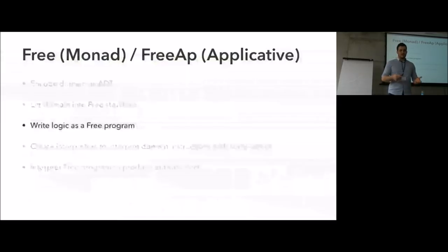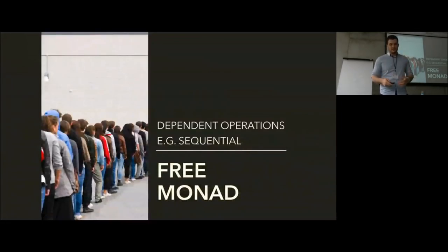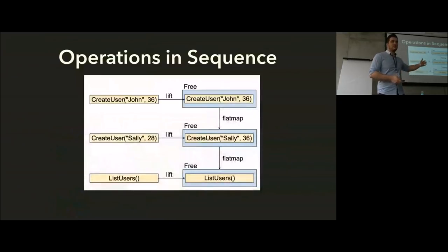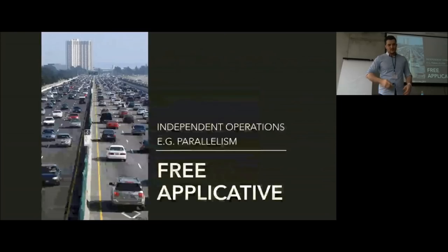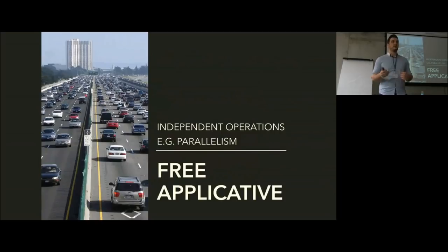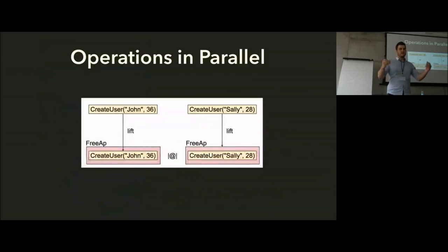The next step is to rewrite our actual logic as a free program. An intuitive way to think about this: free monads can be used for dependent operations in your domain, which usually translates to sequential operations. Flat-mapping between them enforces ordering because to run the next thing you need the result from the previous one. Free applicative lets us deal with independent operations — this doesn't itself mean parallelism, but we can interpret it to get parallelism. Once lifted into the free applicative, we can put operations together with the pipe symbol to run create-user-John and create-user-Sally independent of one another.